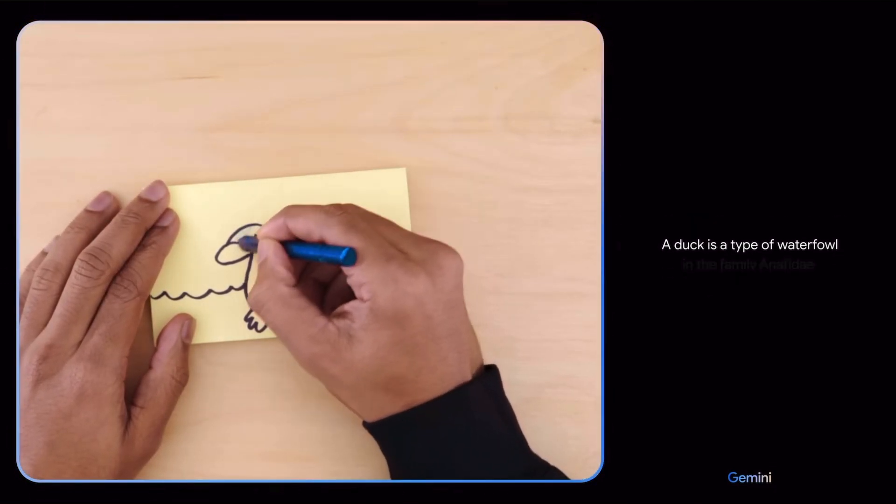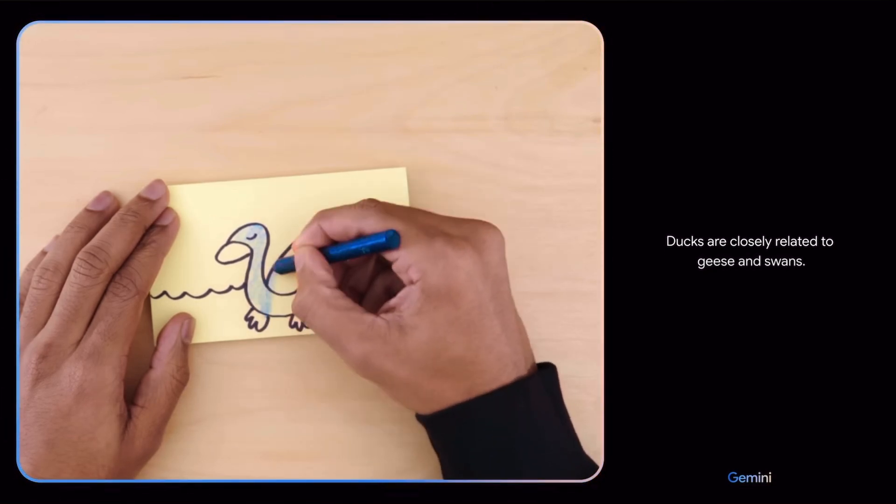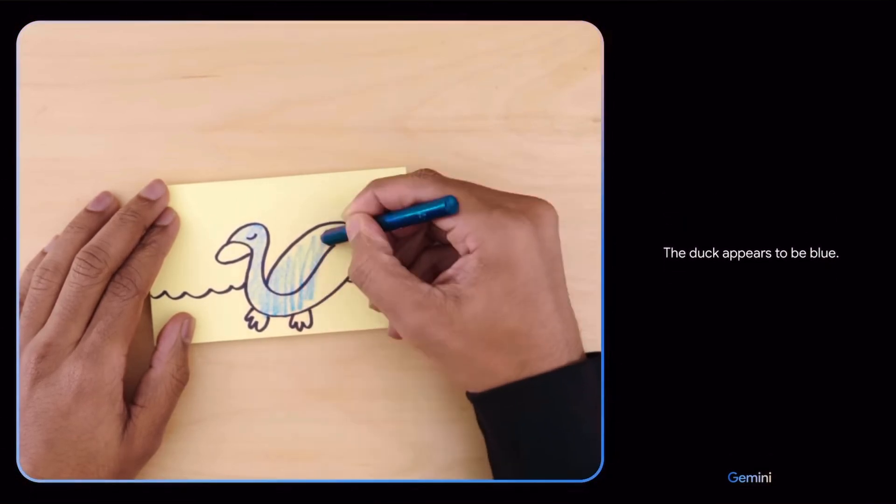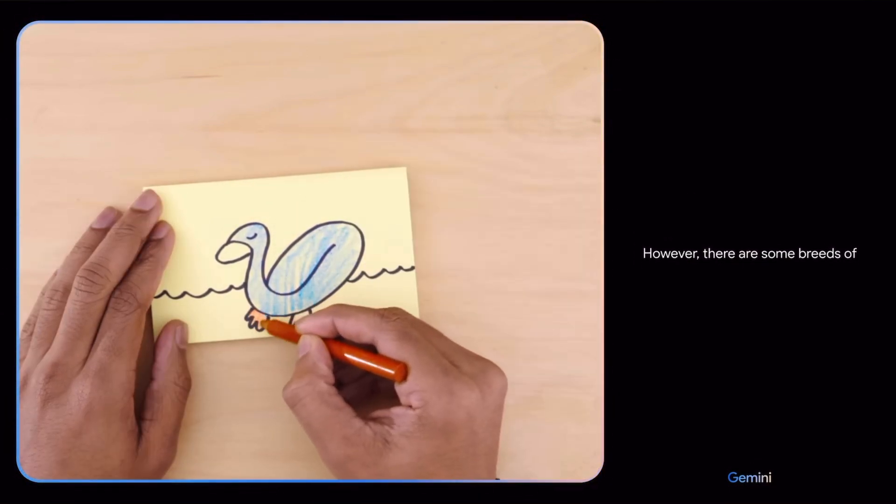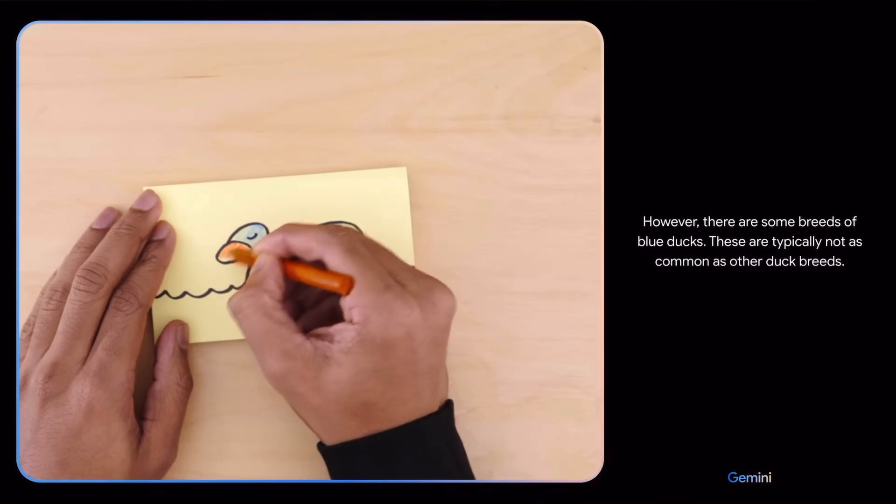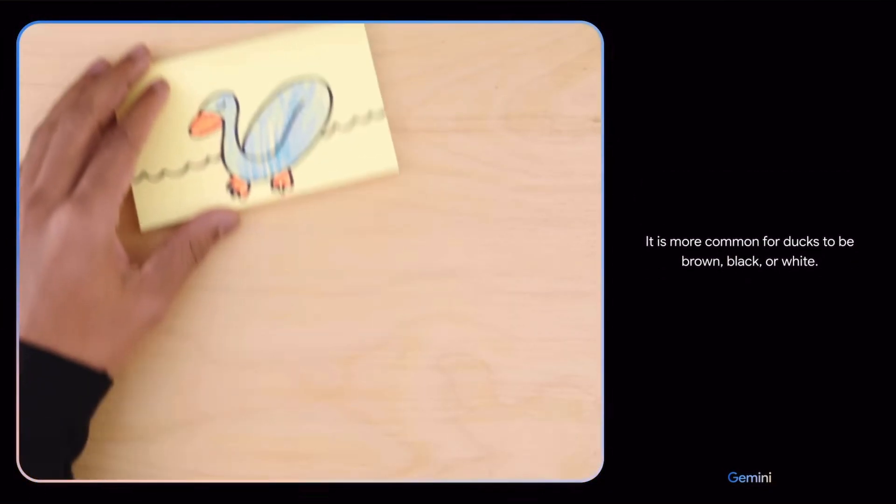A duck is a type of waterfowl in the family Anatidae. Ducks are closely related to geese and swans. The duck appears to be blue. This is not a common color for ducks. However, there are some breeds of blue ducks. These are typically not as common as other duck breeds. It is more common for ducks to be brown, black or white.